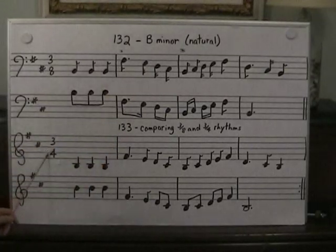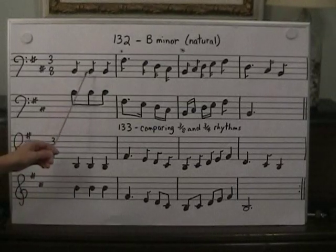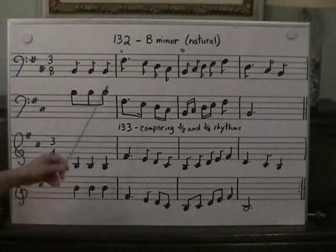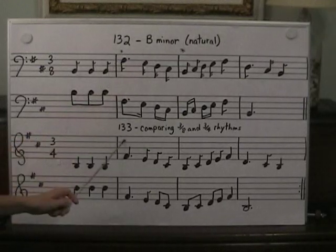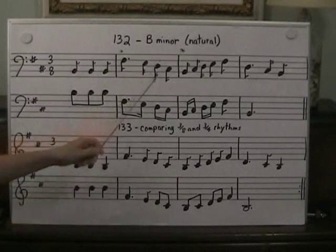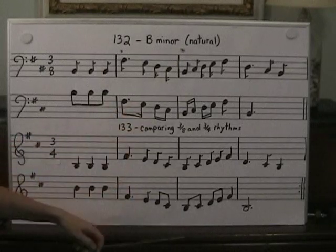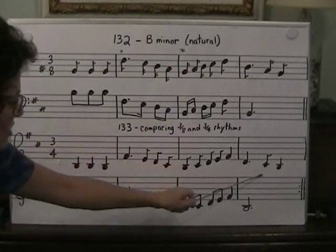Let's look at 3/4 time now. In 3/4 time we have 3 quarter notes, or the equivalent, in each measure. So where we have 3 eighth notes in 3/8, we have 3 quarter notes here. Let's compare as we go along: where we have a dotted 8th and a 16th in 3/8, we have a dotted quarter and an 8th in 3/4. And every time we have 2 sixteenths, we have 2 eighths — just like that. Here's the dotted 8th and 16th pattern again: dotted quarter, 8th.